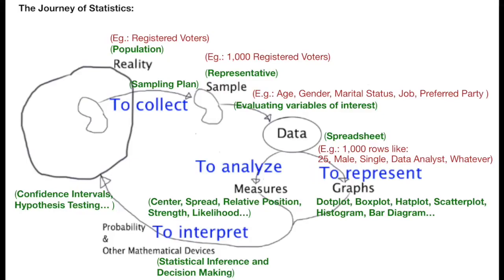These are variables precisely because they vary from individual to individual. Evaluating a variable in an individual means getting the value that the variable takes in that particular individual. For example, in this sample we might have John Smith. When we evaluate these five variables in John Smith, we get 25, male, single, data analyst and whatever party he prefers. Since we have 1,000 individuals, we will end up with 1,000 rows like this. One row per each individual. And in each row we will have five columns, one column per variable. This data set is commonly stored in a spreadsheet.